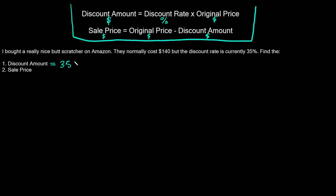The discount amount equals the discount rate times the original price. The discount rate is 35 percent and the original price is $140, so the discount amount equals 35% times $140. We can't leave the discount rate as a percentage — we have to turn it into a decimal.